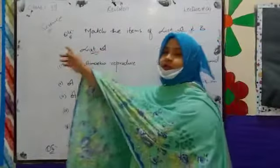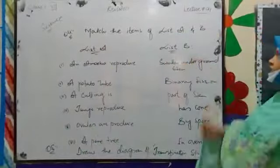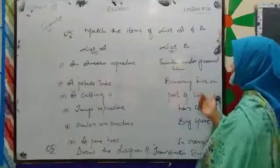Question number 4 is to match the items of column A and column B. Two lists to match together.